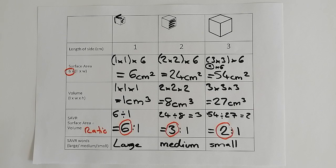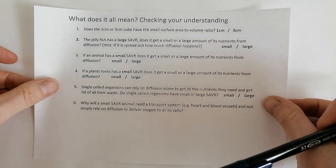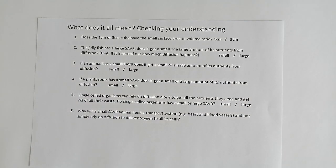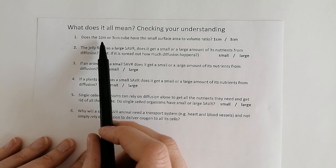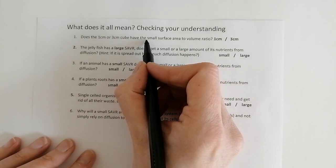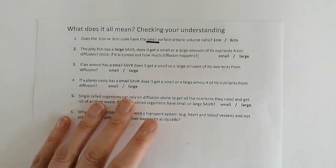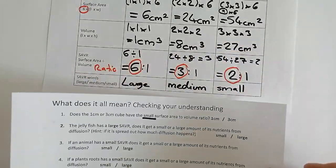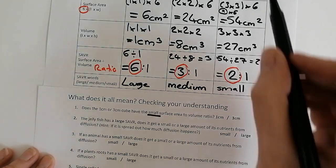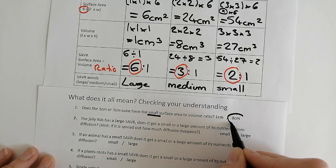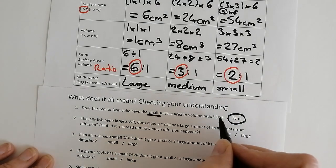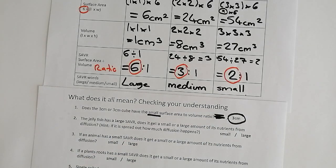That's the first part of what I've set you to do. Now we need to make sense of why this matters in terms of biology. So, these are the questions to check that you know what's going on. Question one: does the one centimetre or the three centimetre cube have the small surface area to volume ratio? We've got 'small' underneath the 3, because it's a 2 to 1 ratio. So the three centimetre cube is our small surface area to volume ratio.